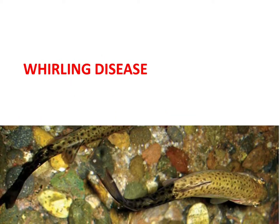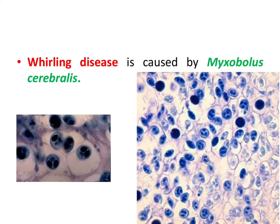First we will see whirling disease in salmonids. The fish represented here is showing the peculiar clinical sign of whirling disease. Please remember that the skeletal deformity and the blackening of tail are what we will discuss. Whirling disease is caused by Myxobolus cerebralis. Here you can see spores of Myxobolus cerebralis in the skull of an infected fish.